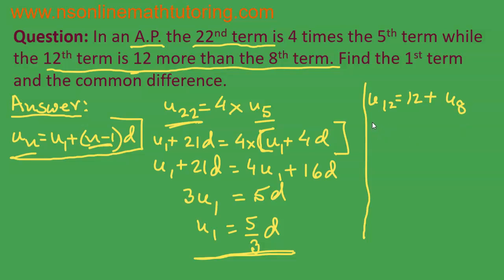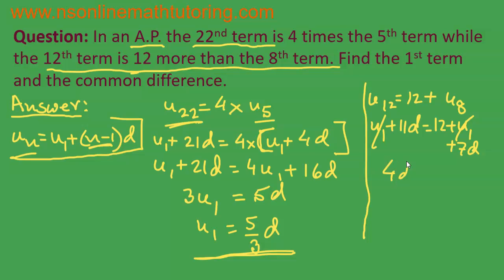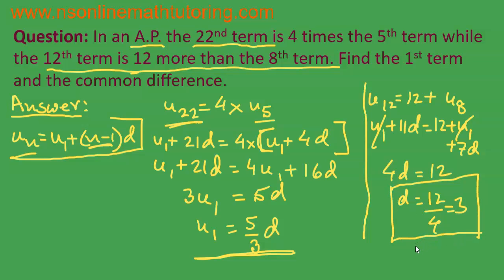So u12 is equal to u1 plus 11d, which is equal to 12 plus u1 plus 7d. We see that u1 and u1 will cancel, and we are left with 11d equal to 12 plus 7d, which gives us 4d equal to 12, or d is equal to 12 over 4, which is equal to 3. So d is equal to 3 — we have found the numerical value of the common difference.